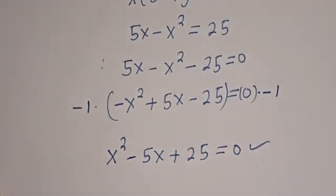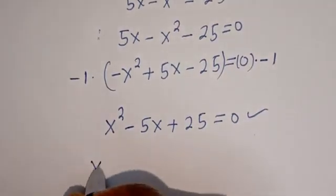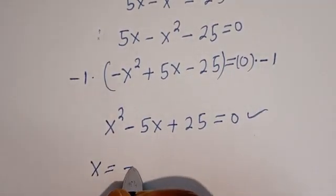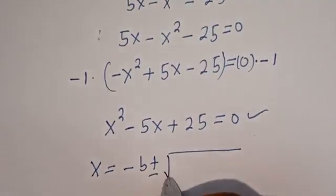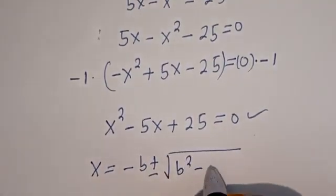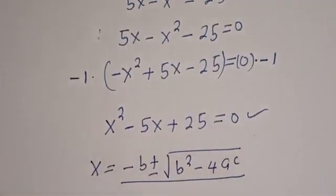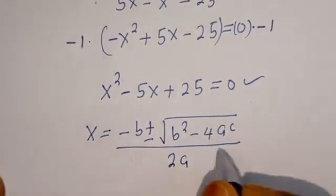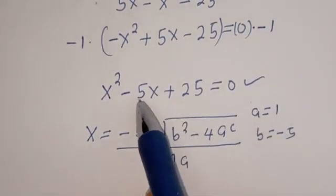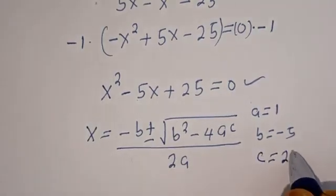This is a quadratic equation which can be solved using the quadratic general formula. The quadratic formula is: x is equal to minus b plus or minus square root of b squared minus 4ac, all divided by 2a. So a is equal to 1, b is equal to minus 5, and c is equal to 25.